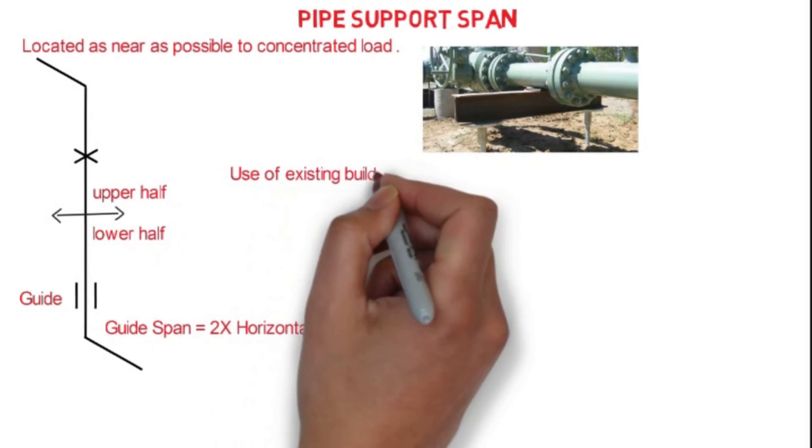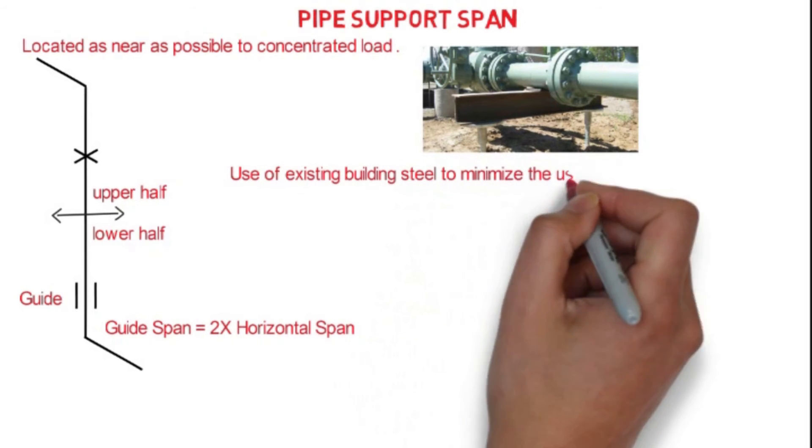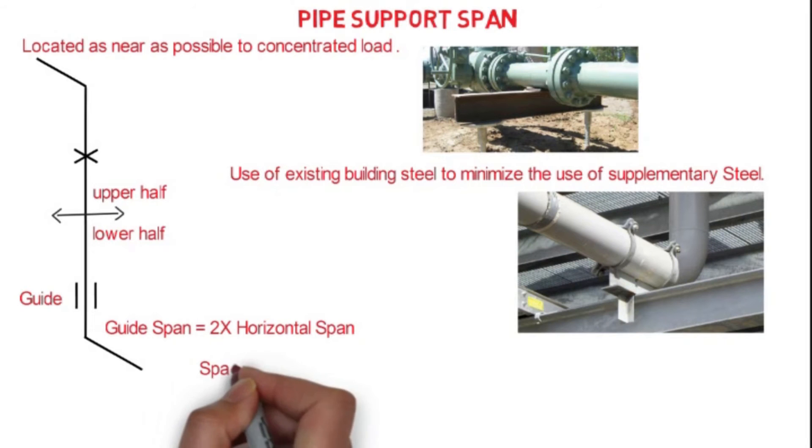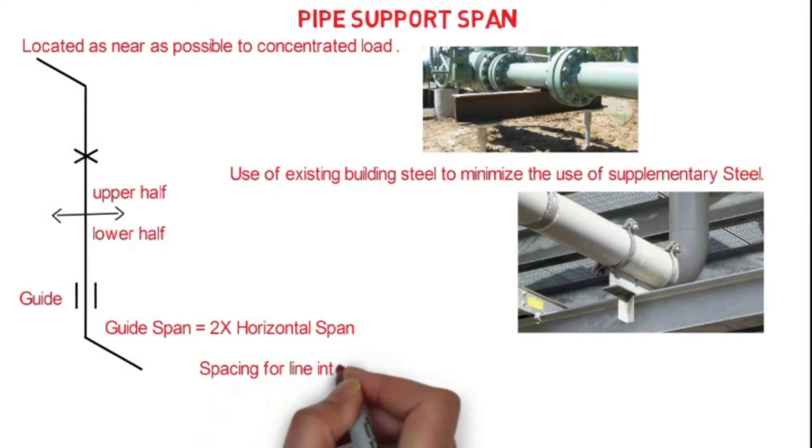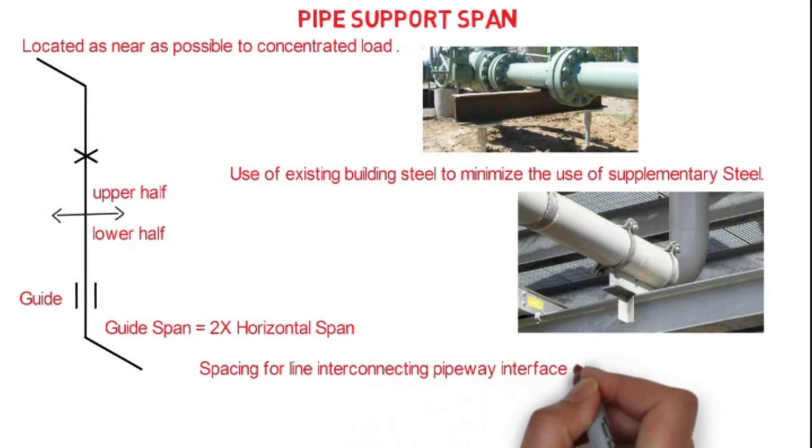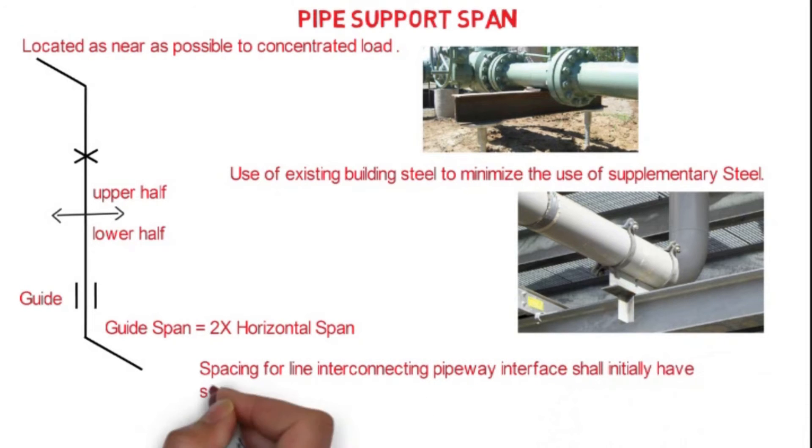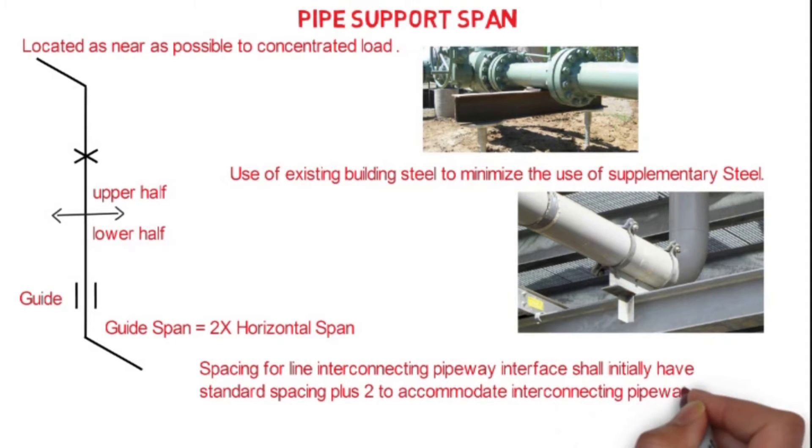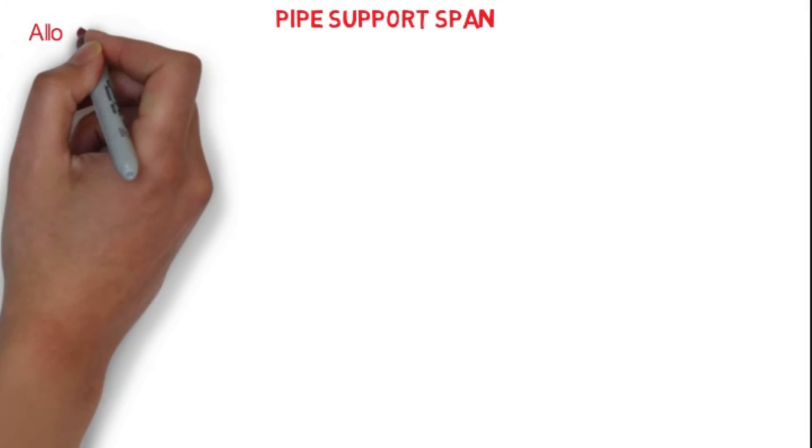Support location should be selected near existing building steel to minimize the use of supplementary steel. Spacing for the line interconnecting pipeway interface shall initially have standard spacing plus two-inch gap to accommodate interconnecting pipeway growth. As we have prepared already one video for the thermal expansion, that you can see in the above link.